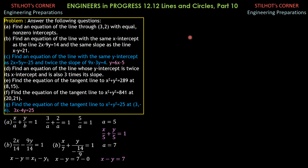Then we proceed to part D: find an equation of the line whose y-intercept is twice its x-intercept and is also 3 times its slope. We write the expected equation of the line in intercept form: x over a plus y over b equals 1. And b equals 2a because the y-intercept is twice the x-intercept. The x-intercept is a, so b is 2a. And this y-intercept 2a is also 3 times the slope of that line. So 2a equals 3m, which means the slope m is 2a over 3.